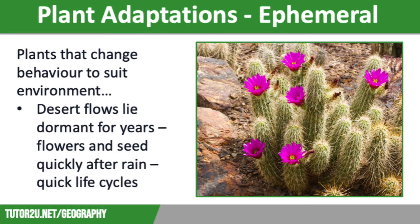Another way that plants can adapt is by being ephemeral. This means they can change their behaviour to suit environmental conditions. For example, some desert flowers can lie dormant for years, but germinate really quickly after a period of rain. This enables them to complete their life cycles in a few weeks, including producing colourful flowers immediately to attract insects that will then help with pollination.